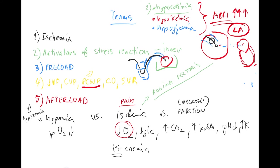Cardiac output is the amount of blood the heart pushes per minute — stroke volume times heart rate. Stroke volume is about 70 mL, heart rate about 70 bpm, so at rest: 70 mL × 70 bpm ≈ 4,900 mL, roughly 5 liters per minute. That's cardiac output.